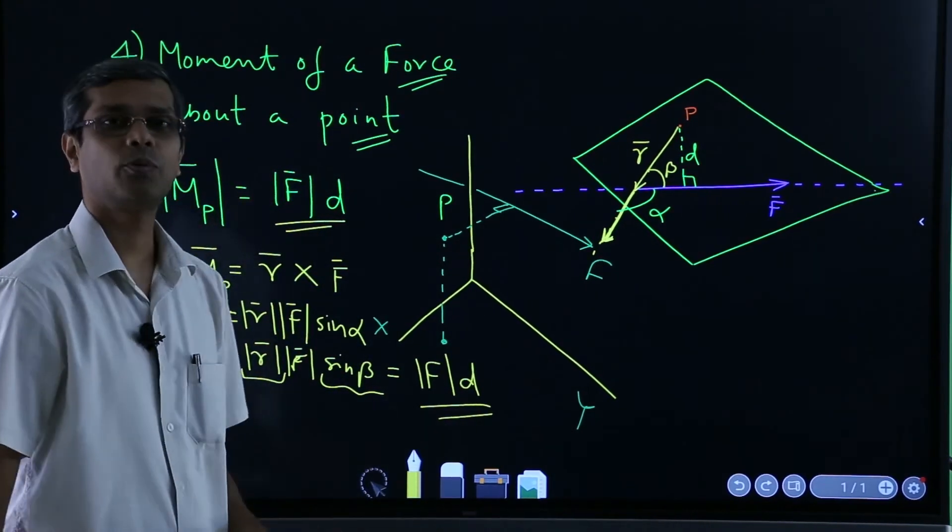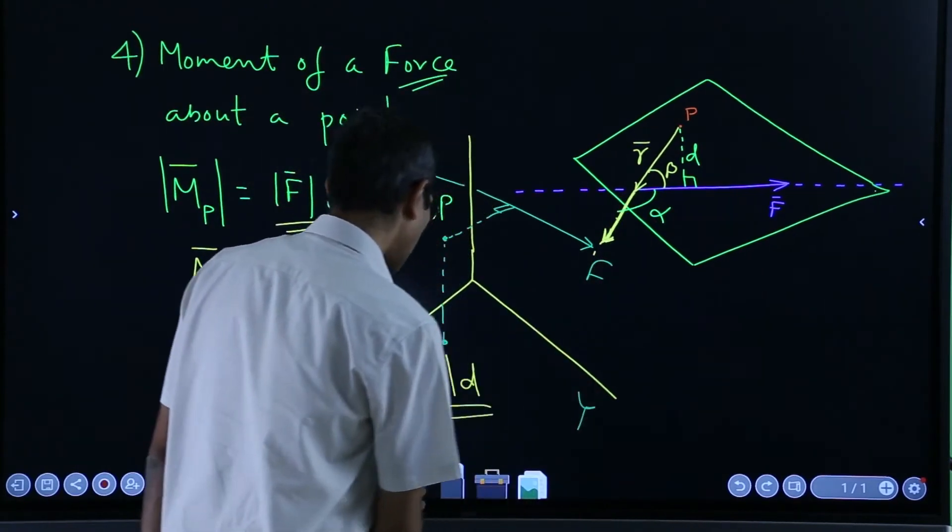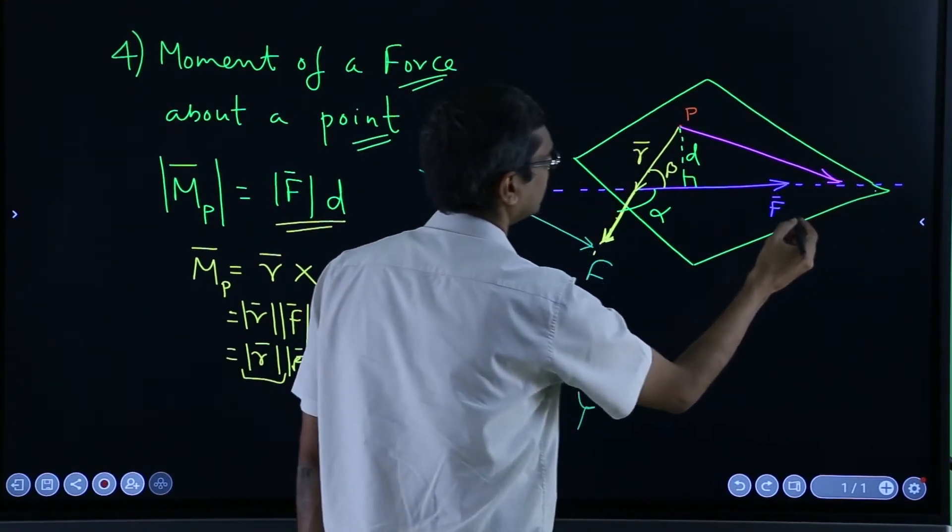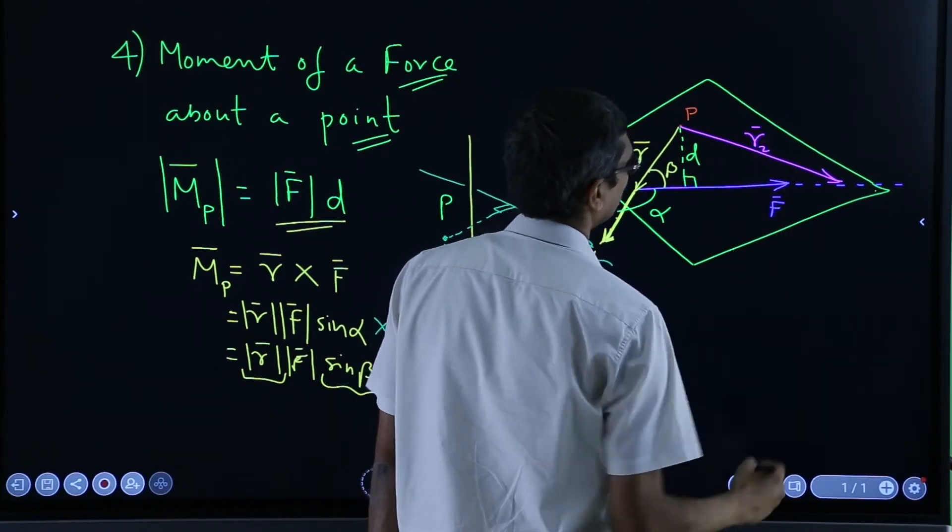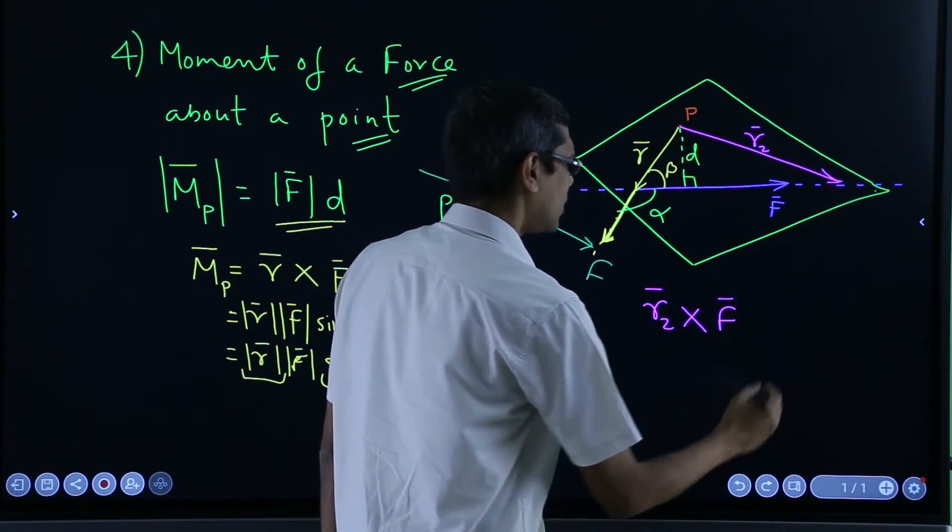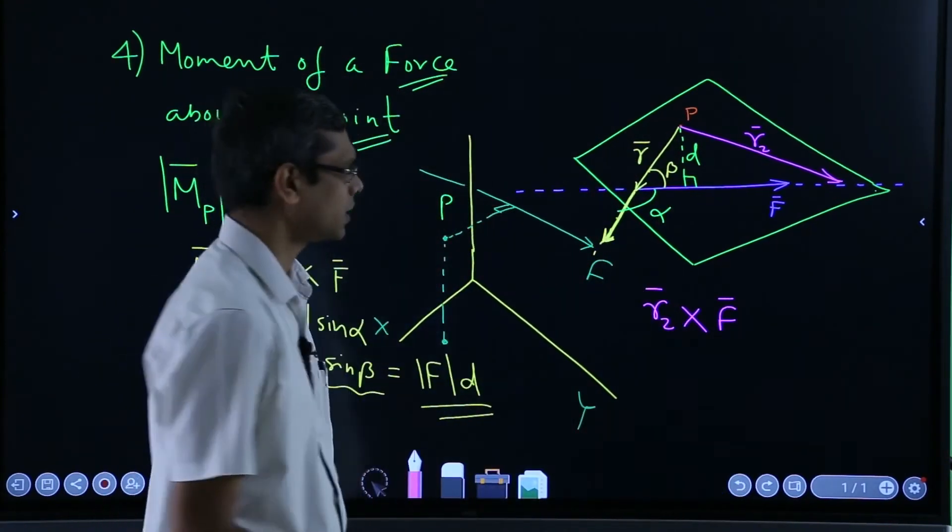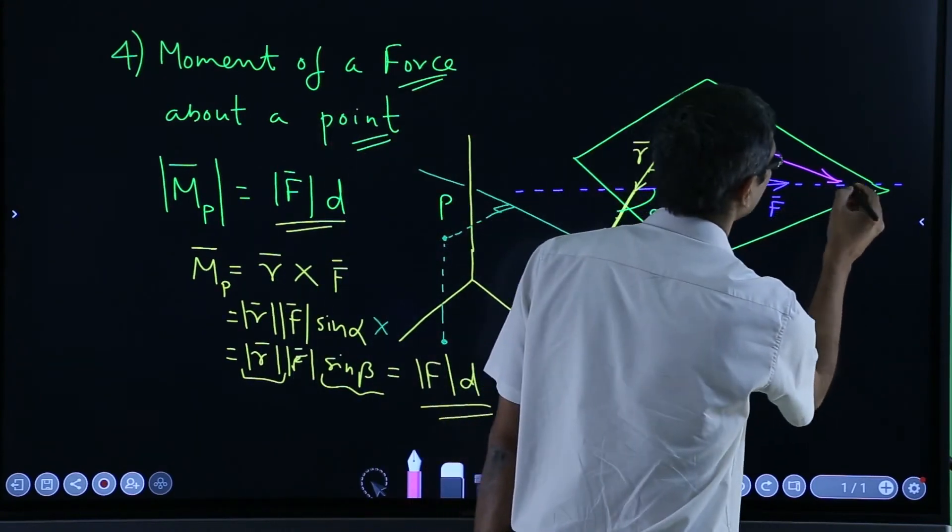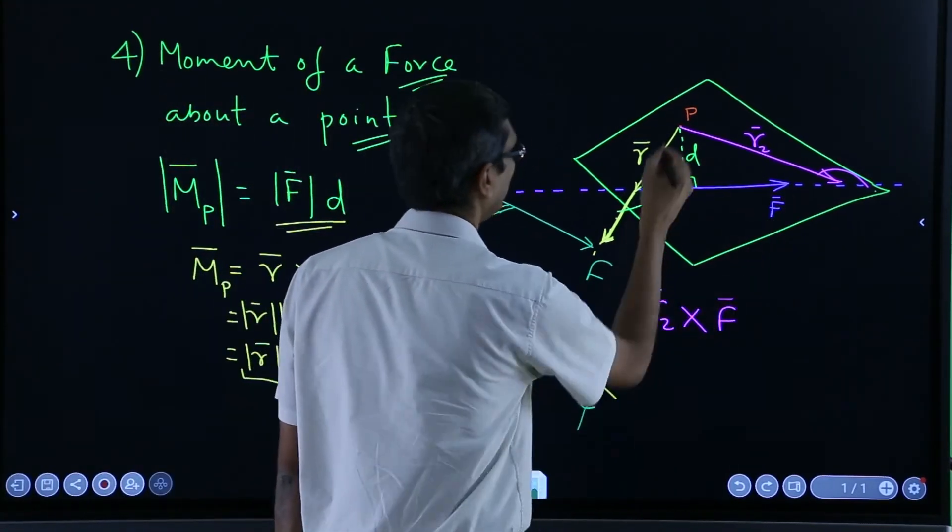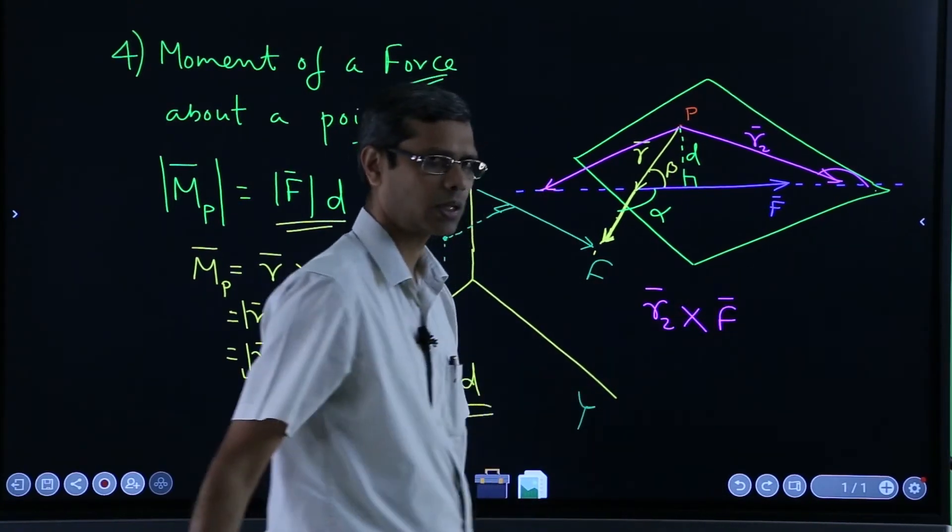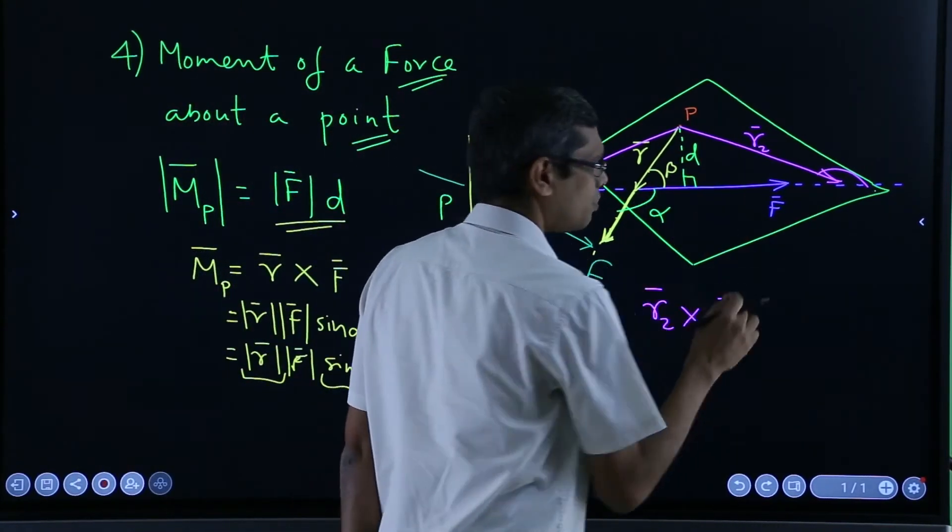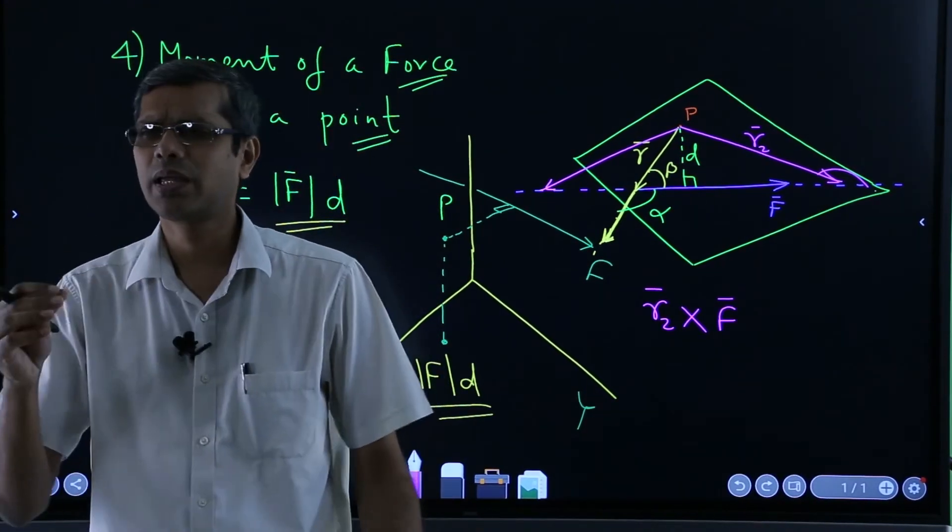So this and this are the same. But from this we get one power - that we can take this point anywhere. For example, I could have taken it here also, called it r2. And the same thing - r2 cross with the force F would have given me the same moment, because r2 sin of this angle again gives me the same d. Nothing changes. I could have taken it here also, here also, anywhere.